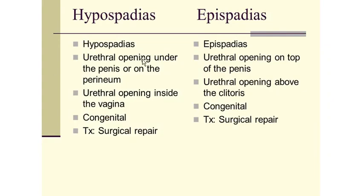Comparing hypospadias and epispadias: in hypospadias the urethral opening is under the penis or on the perineum; in epispadias the urethral opening is on top of the dorsum of the penis. In females, in hypospadias the urethral opening is inside the vagina; in epispadias it opens above the clitoris. Both are congenital anomalies and both need surgical repair. Thank you very much for your patient hearing. God bless you all.